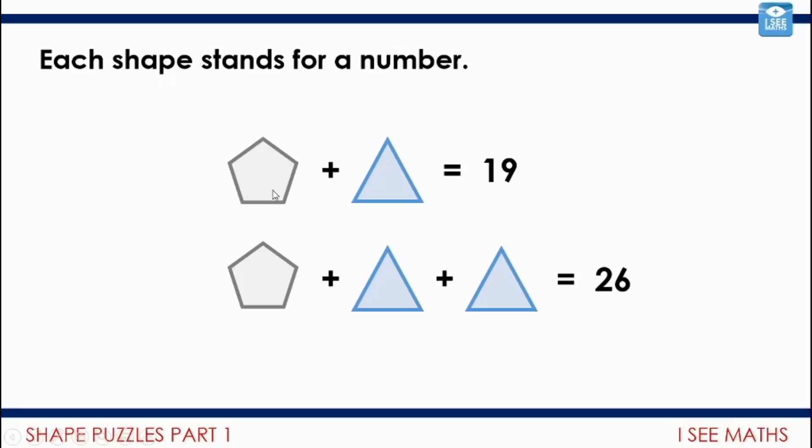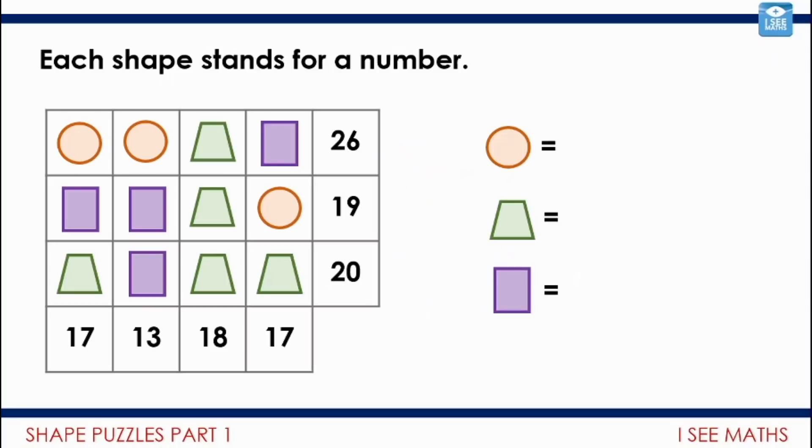Let's have a look. What stays the same? We've still got this pentagon here, and these two pentagons are the same, and this triangle as well. So this part here is the same, but on the number sentence below we've got an extra triangle. What had the values changed? Well, in total it's seven more—19 to 26 is the difference of seven for this extra triangle. The triangle must be worth seven, and if that one's worth seven, the pentagon must be worth 12. 12 plus 7 equals 19.